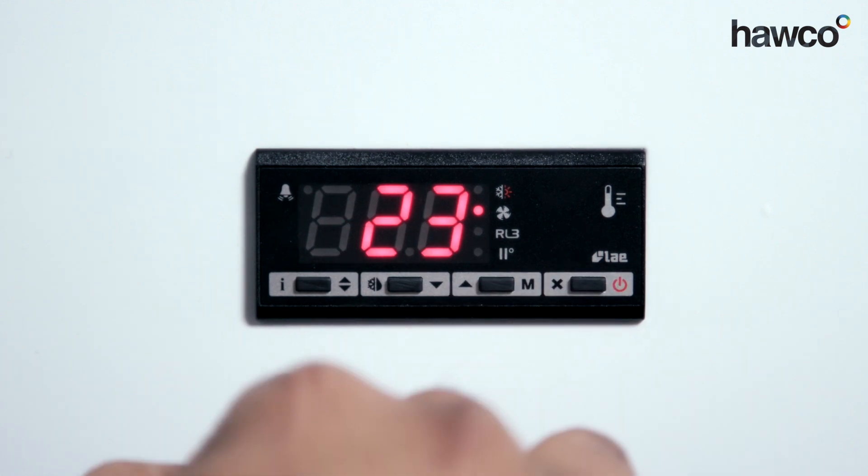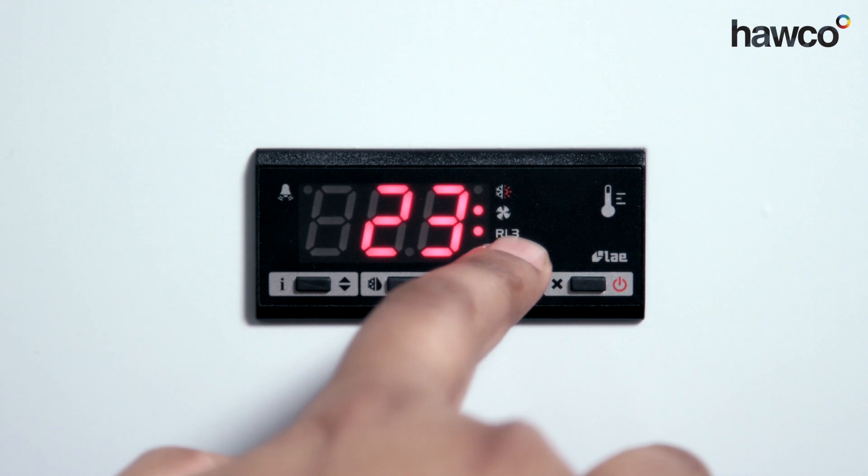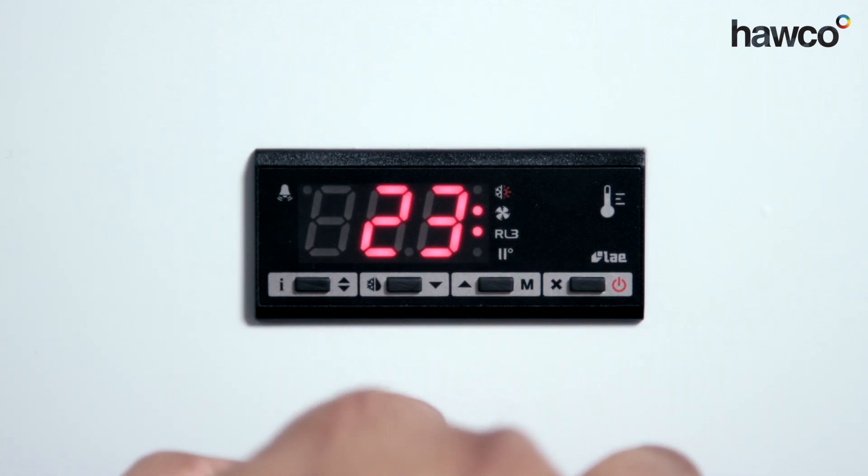So we come out of the parameters. For this moment in time the light is off, so we're going to push and hold the M button or manual button. Push and hold it for a couple of seconds. L3 or Relay 3 has been turned on, so that means the light is now on.